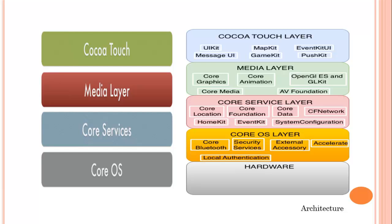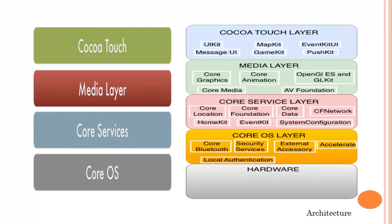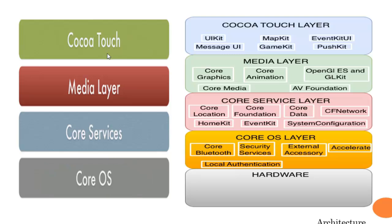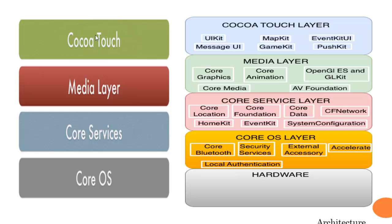This is the diagram showing the architecture of iOS. The architecture of iOS consists of four layers. The lowest layer is called CoreOS. The uppermost layer is called Cocoa Touch. On the uppermost layer, that is Cocoa Touch, the user interacts directly with the application. Now we will discuss the architecture in detail.